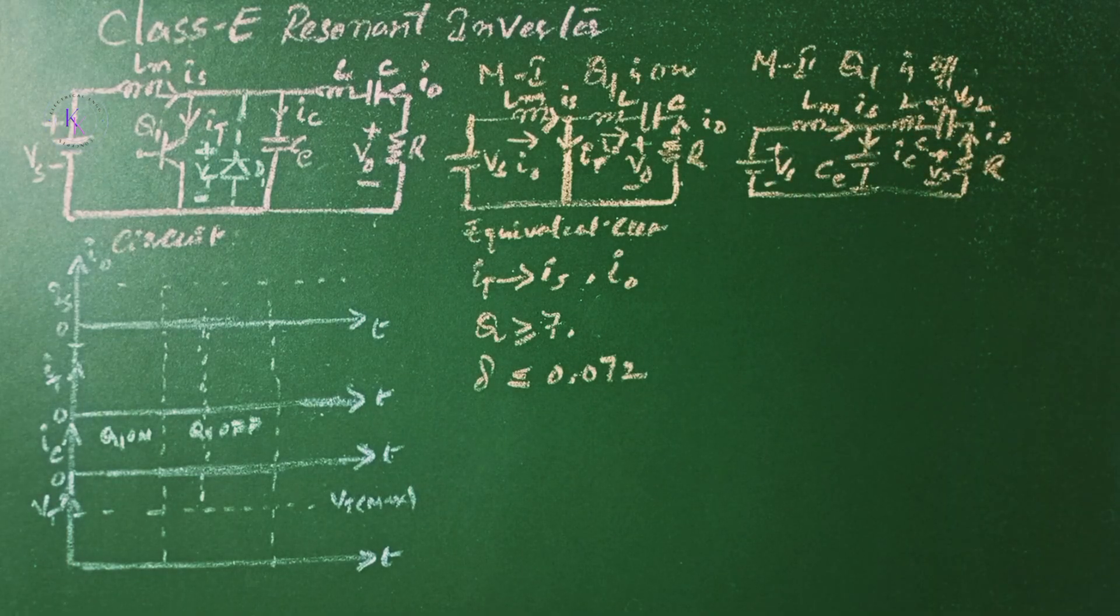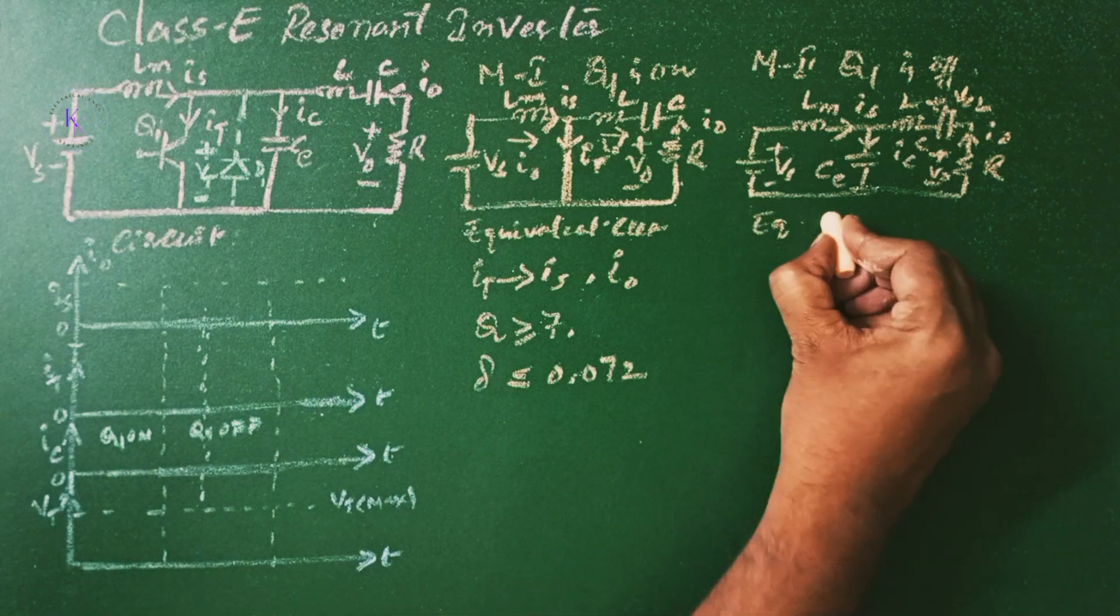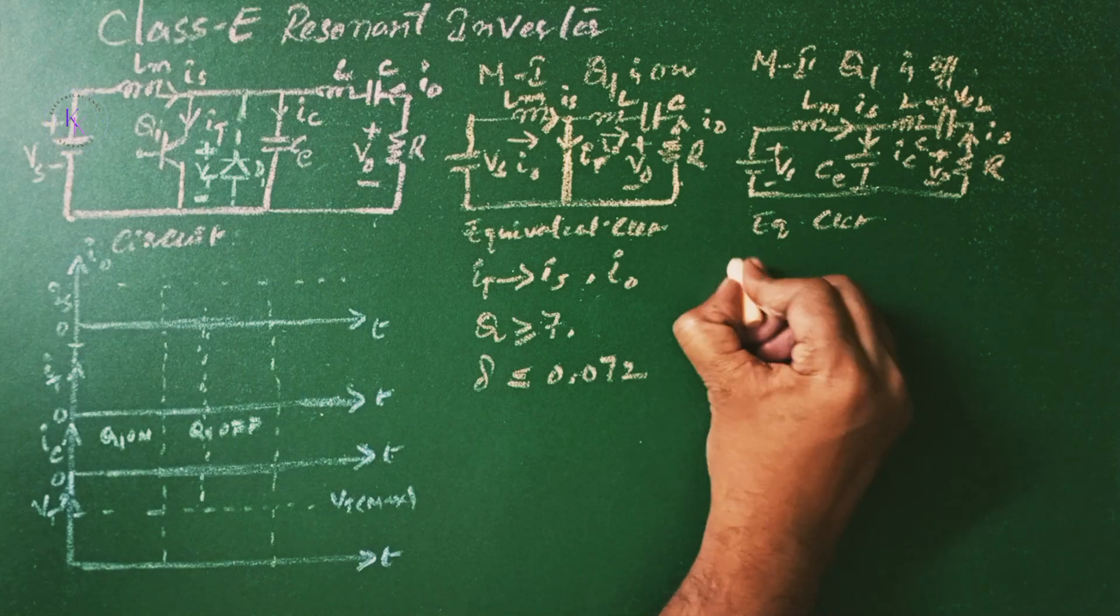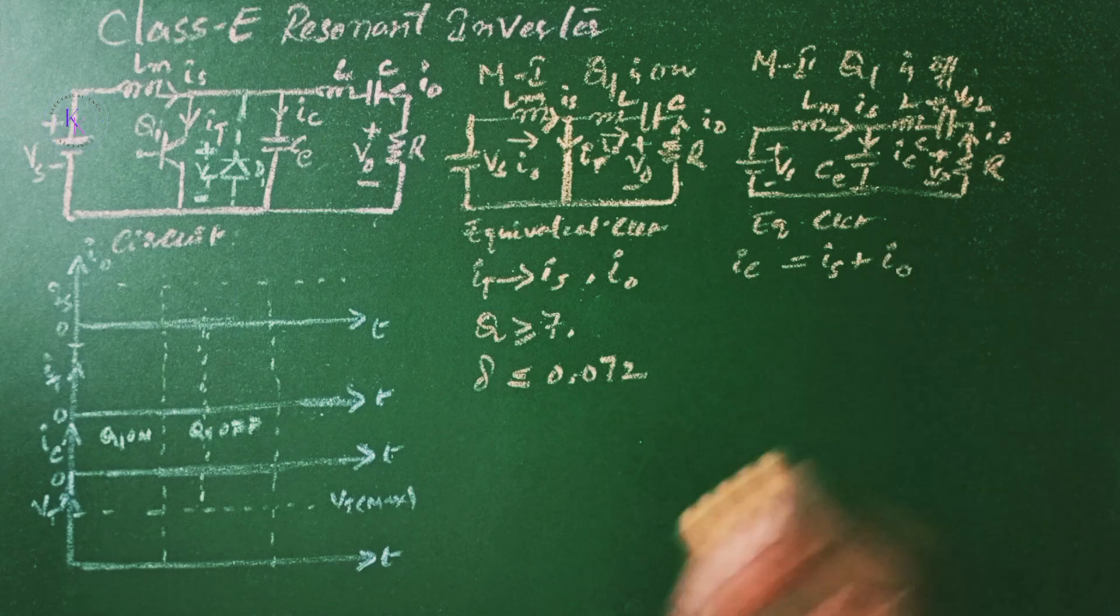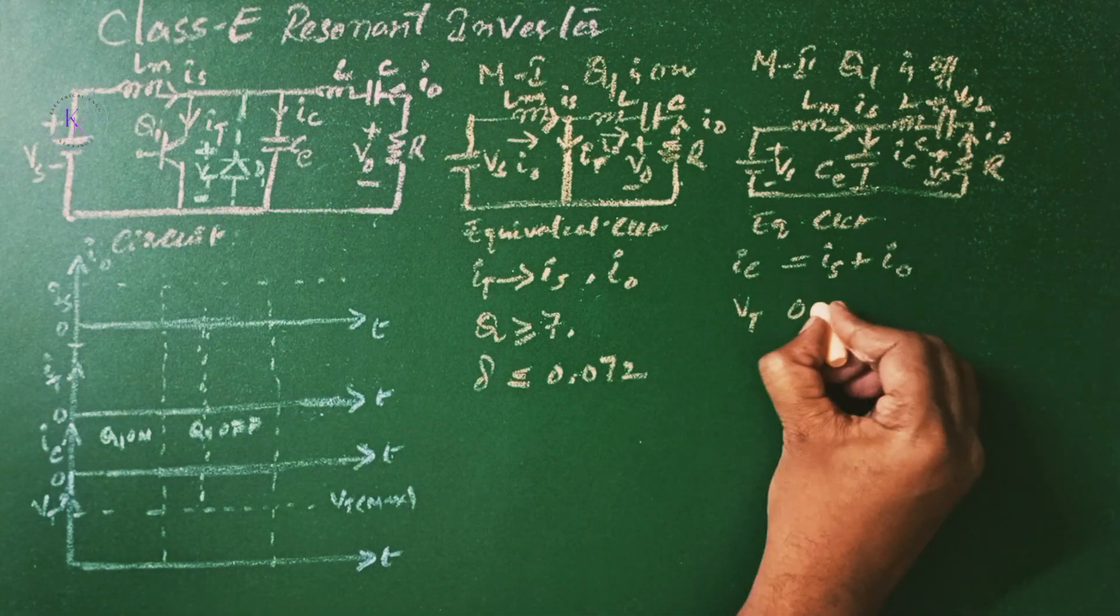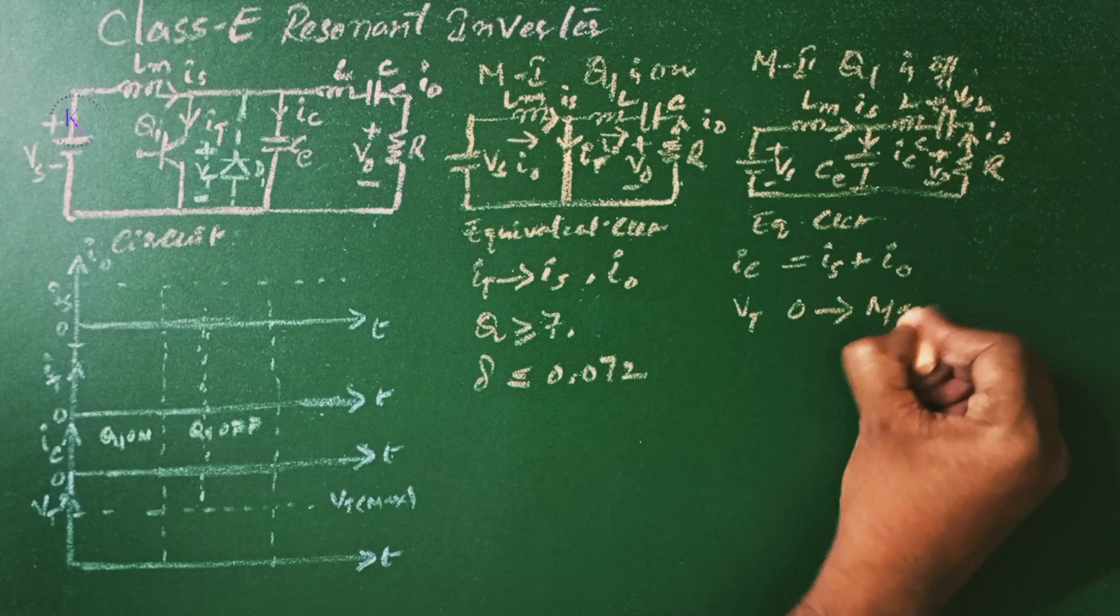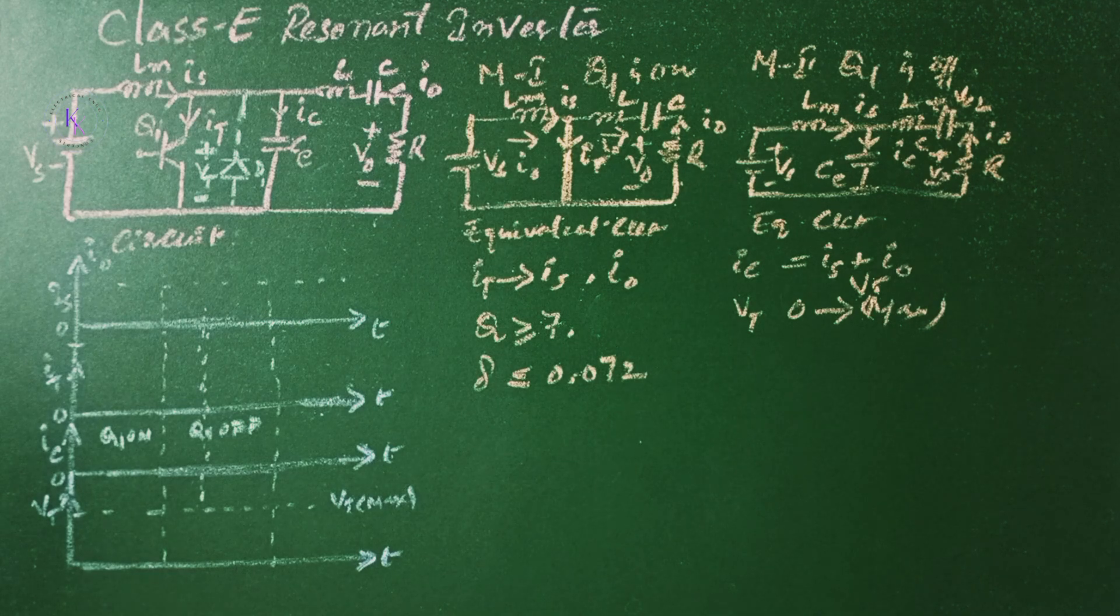During this mode the transistor Q1 is turned off. This is an equivalent circuit for Mode 2. The capacitor current IE becomes the sum of the input current IS plus the output current I0. The switch voltage VT rises from 0 to a maximum value VT max and falls to 0 again.